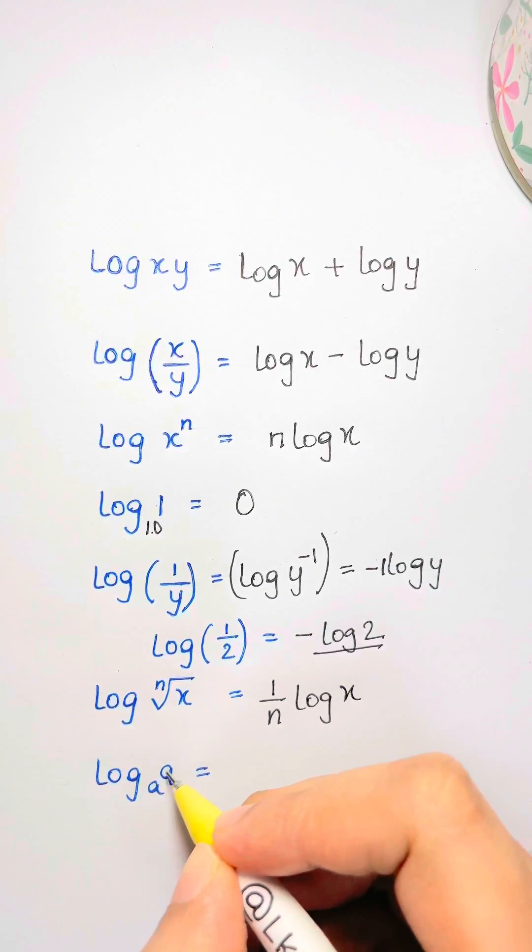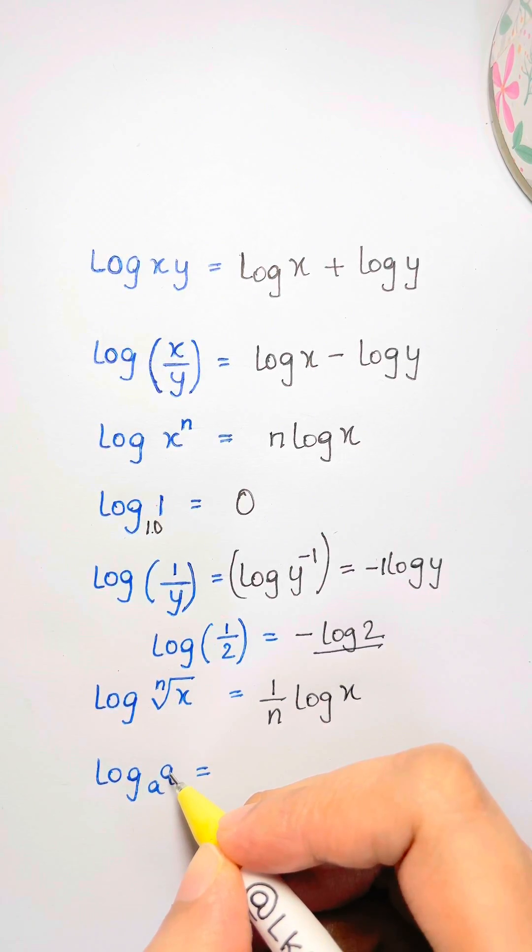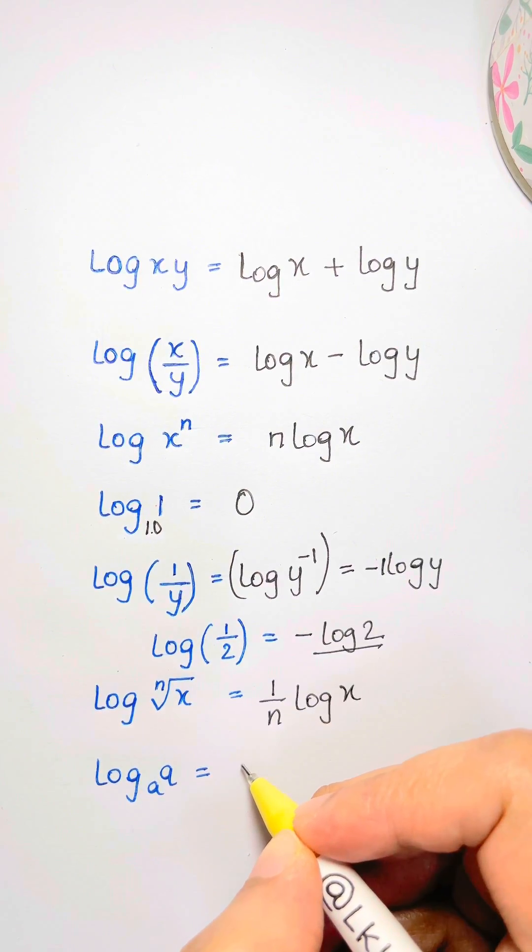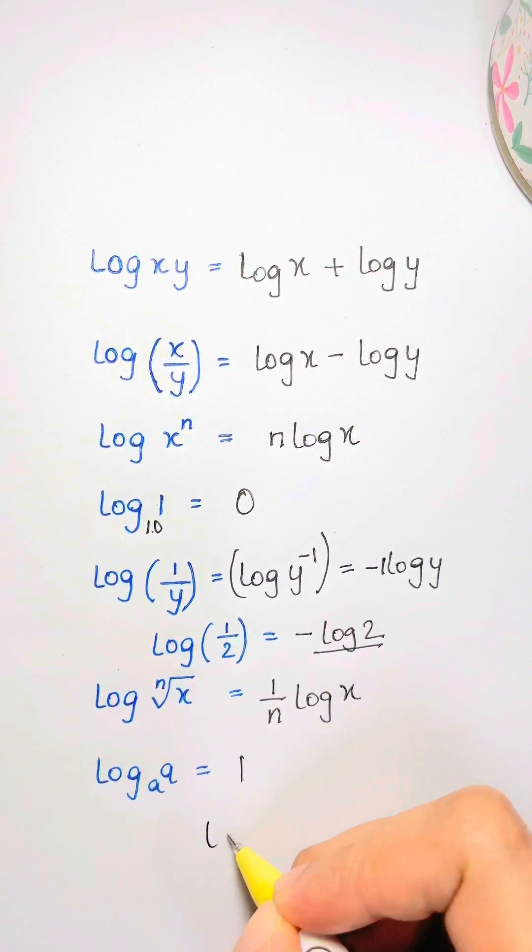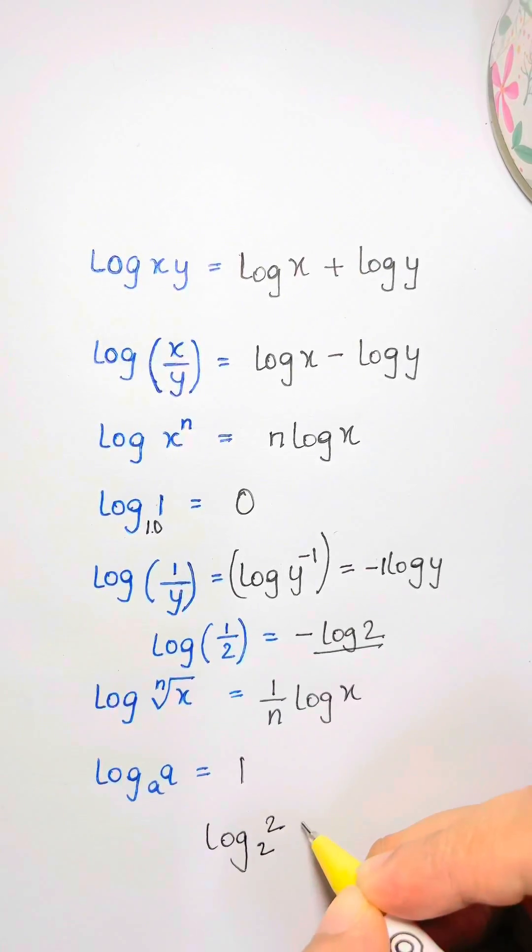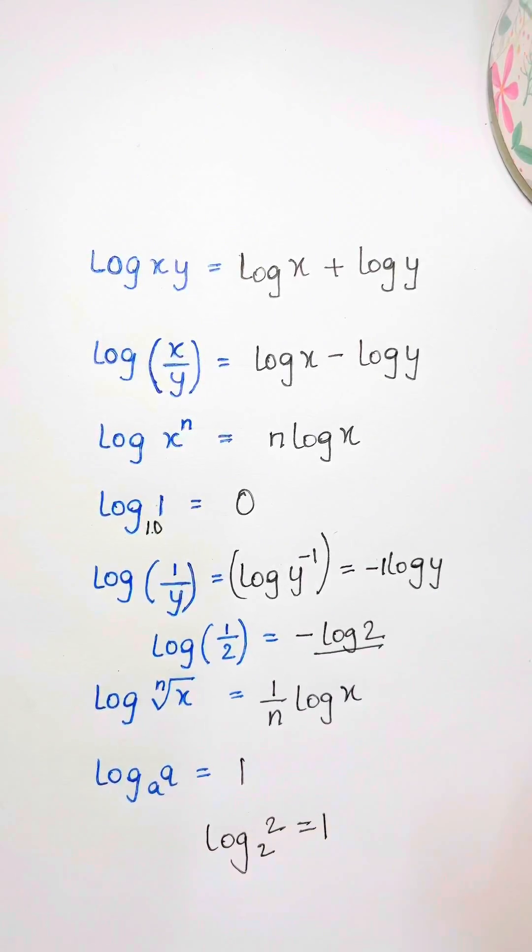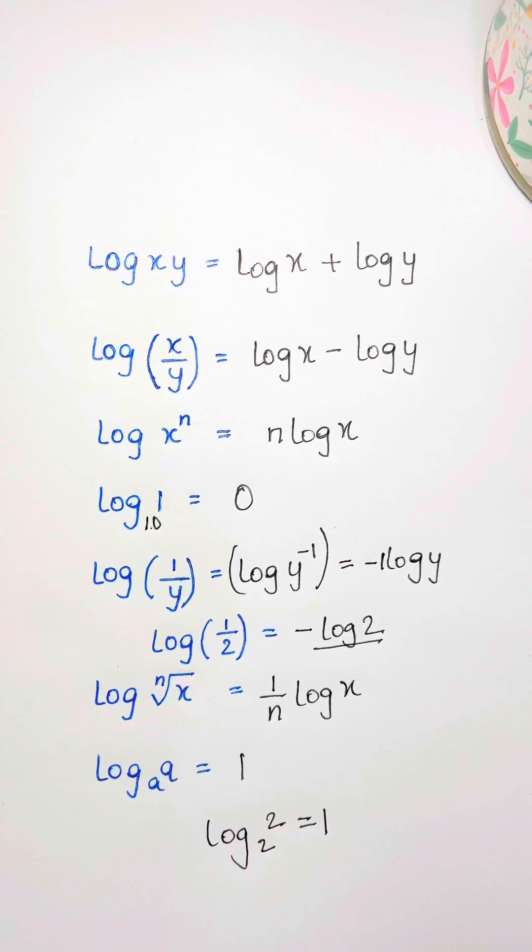Here, it's saying log of a to the base a. That means a to the power of what is a. A to the power of one is a. So for example, if you see log two base two, it's equal to one. These are your log rules. Thank you so much for watching.